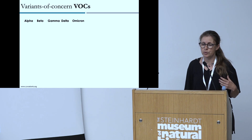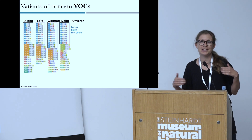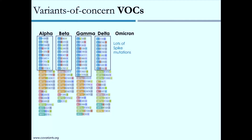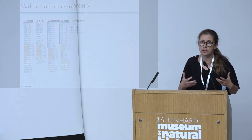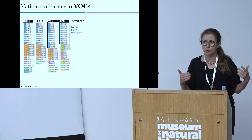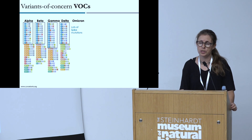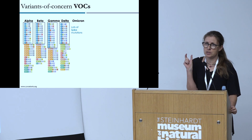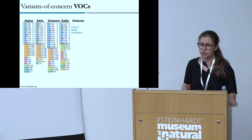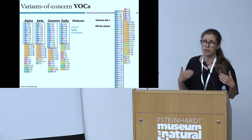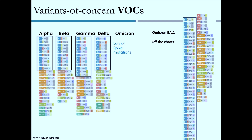From an evolutionary point of view, what is unique about these variants is they all have a lot of mutations — more than expected based on the rate of mutation accumulation, the evolutionary rate of the virus. The distribution of mutations is also tilted: the majority are non-synonymous, and about 50% or more of the mutations are in the spike protein, despite the spike gene comprising far less than 50% of the genome. This is what Omicron BA1 looks like — it's off the charts, with a very large number of mutations in the spike protein.